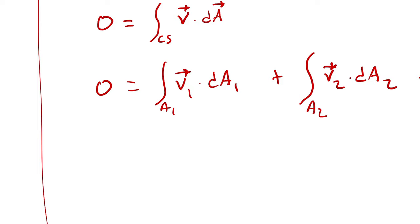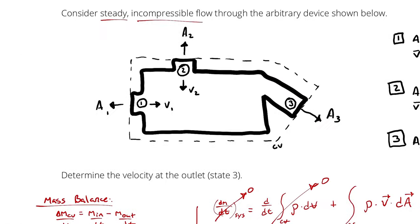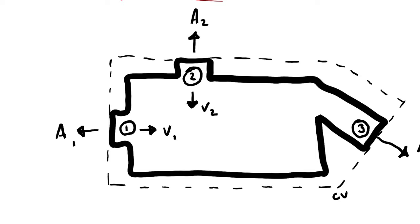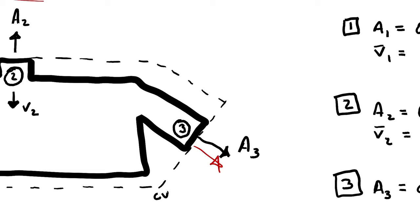When using uniform flow I have to keep track of how the velocity vector and area vectors relate. My rule of thumb: when the velocity and area vectors are in the same direction, the dot product simplifies to a positive quantity; when they are in opposite directions, it simplifies to a negative quantity. The area vector is always defined in the outward direction. So at state 1, V₁ and A₁ are in opposite directions — negative. At state 3, V₃ and A₃ are in the same direction — positive.